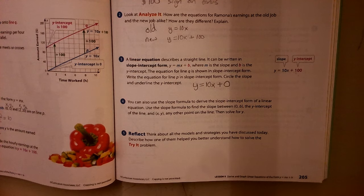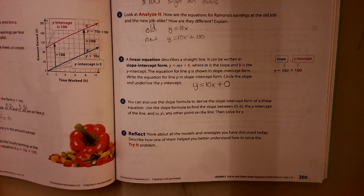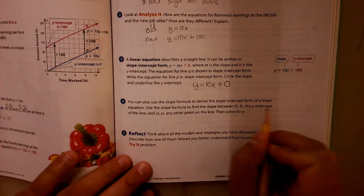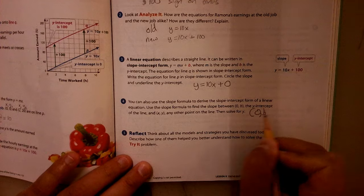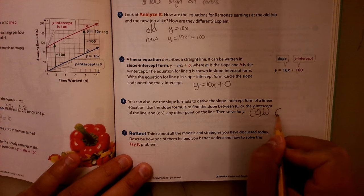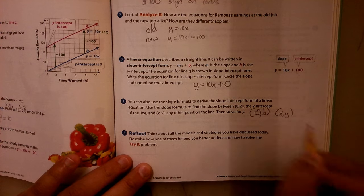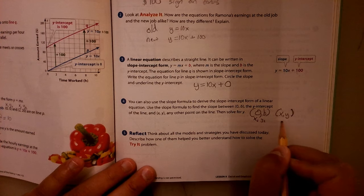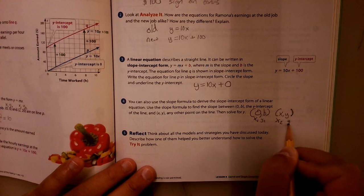Then it says, you can also use the slope formula to derive the slope-intercept form of a linear equation. Use the slope formula to find the slope between 0, B, the Y-intercept of the line, and then X, Y, any other point on the line, then solve for Y. So we're using 0, B as a point, and we're using X, Y as a point. So I'm going to call this X1 and Y1, and then I'm going to call this X2 and Y2.